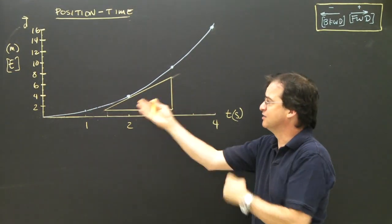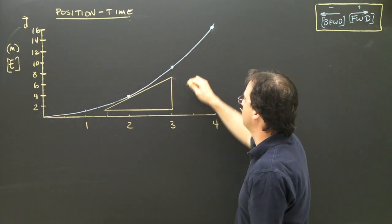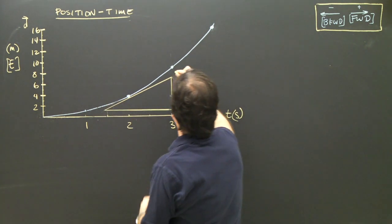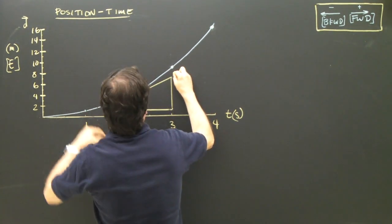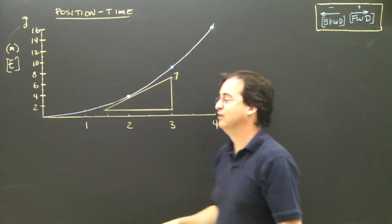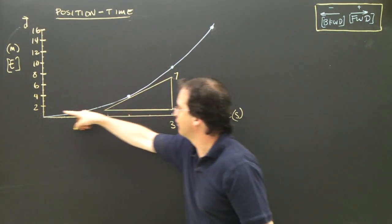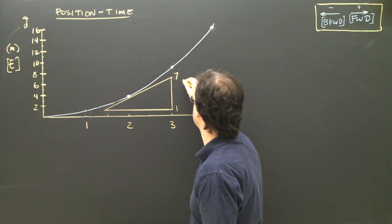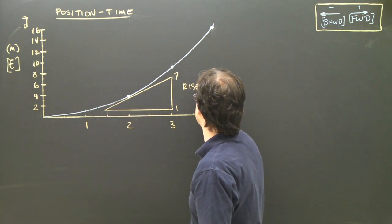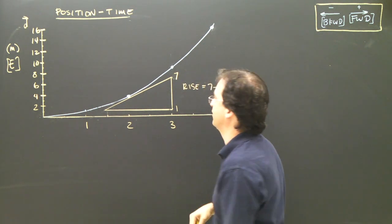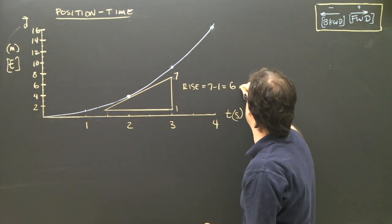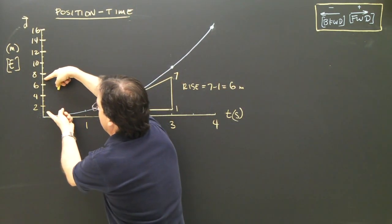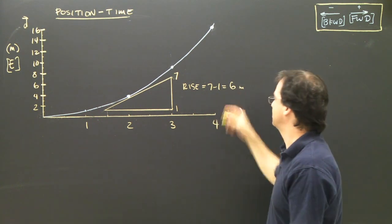There's my triangle. That works pretty well because now I've got a base that goes from 3 to 1.5. If I look at my rise, my rise goes from about 7. I go across here and I look there and it's 1. So my rise is 7 minus 1 is 6. And the units are meters because this was 7 meters minus 1 meter is 6 meters.